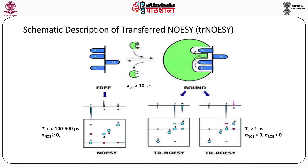A schematic description of transferred NOEs is provided in the figure. In blue you have a small molecule and in green is the macromolecule, and their on-rates and off-rates are shown. K-off should be greater than 10 s⁻¹. The green macromolecule binds to the blue small molecule and now you can see the signal. When the small molecule is free, you get a NOESY spectrum with diagonal peaks and cross peaks that have a phase opposite to the diagonal peaks. In transfer NOEs, the conformation of the molecule changes and there is a change in the phase of the NOEs. One can also record transfer ROEs in the transfer NOESY and transfer ROESY experiments respectively.